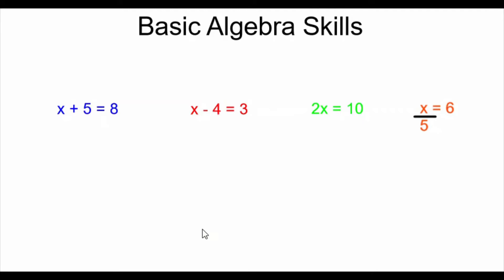When we do algebra, our goal is to have our variable, our unknown, to be isolated on one side of the equal sign. In these examples, our unknown is x, and we want it isolated alone on one side of the equal sign.